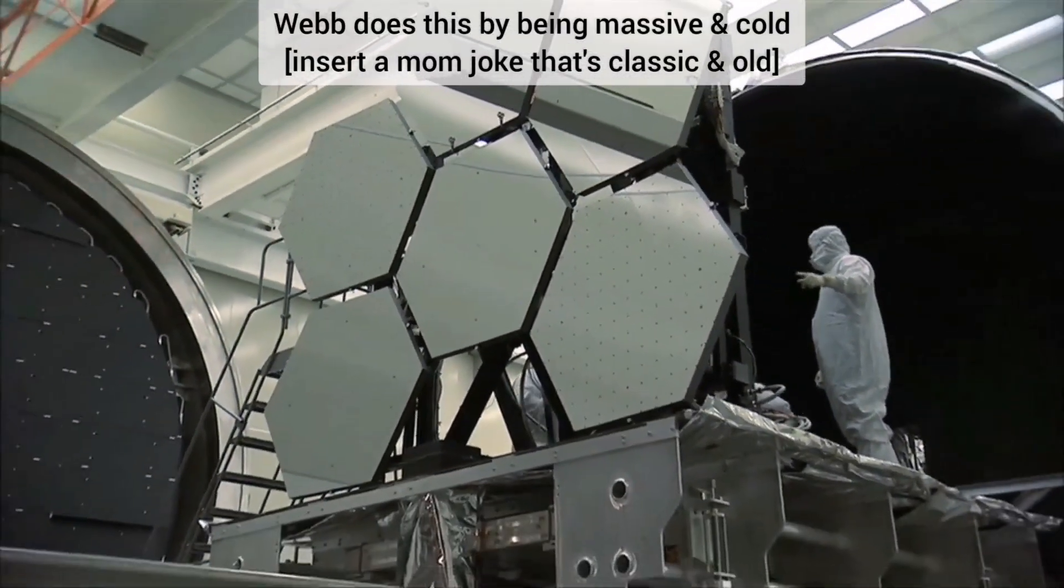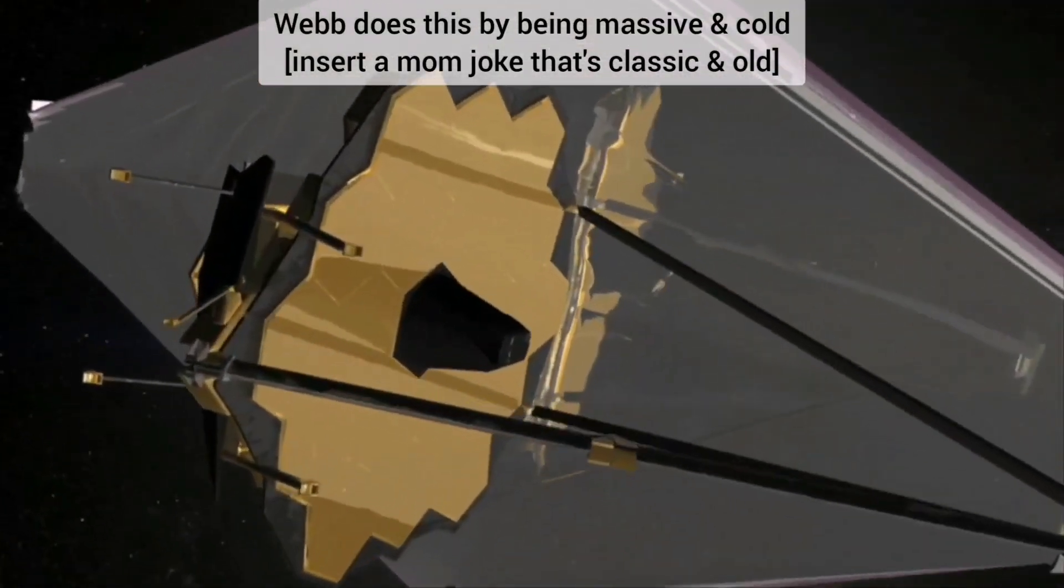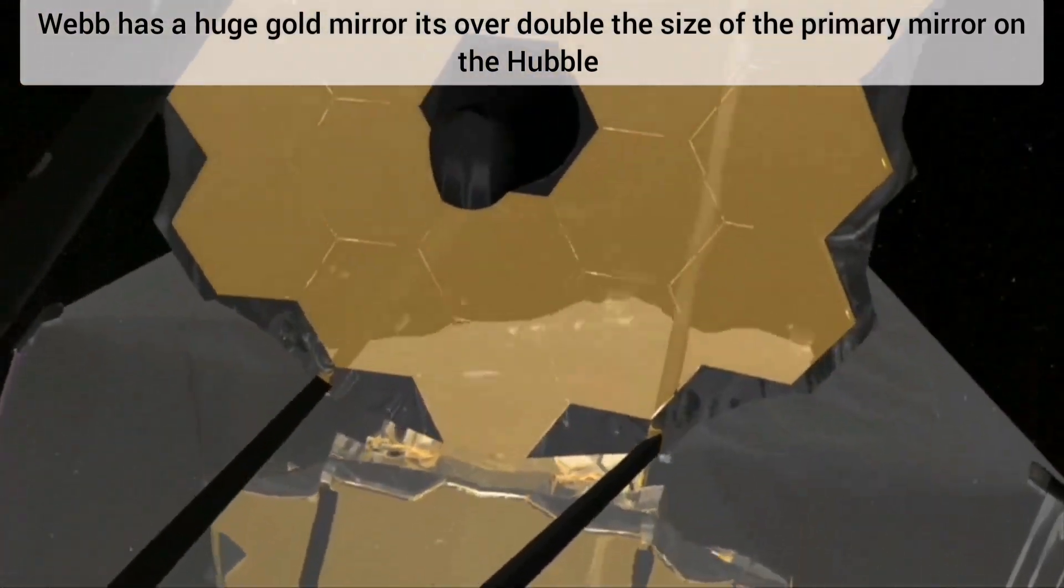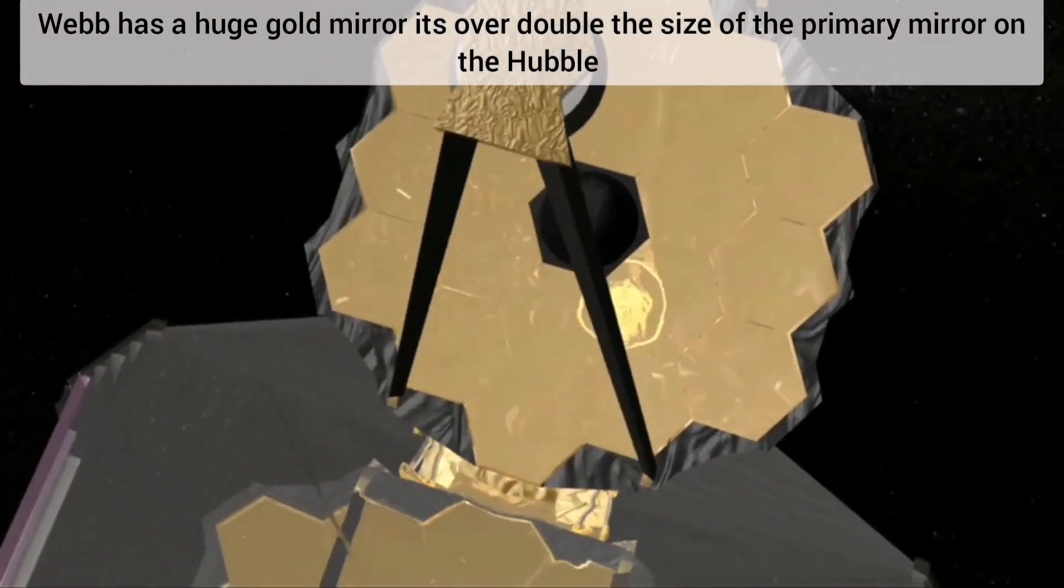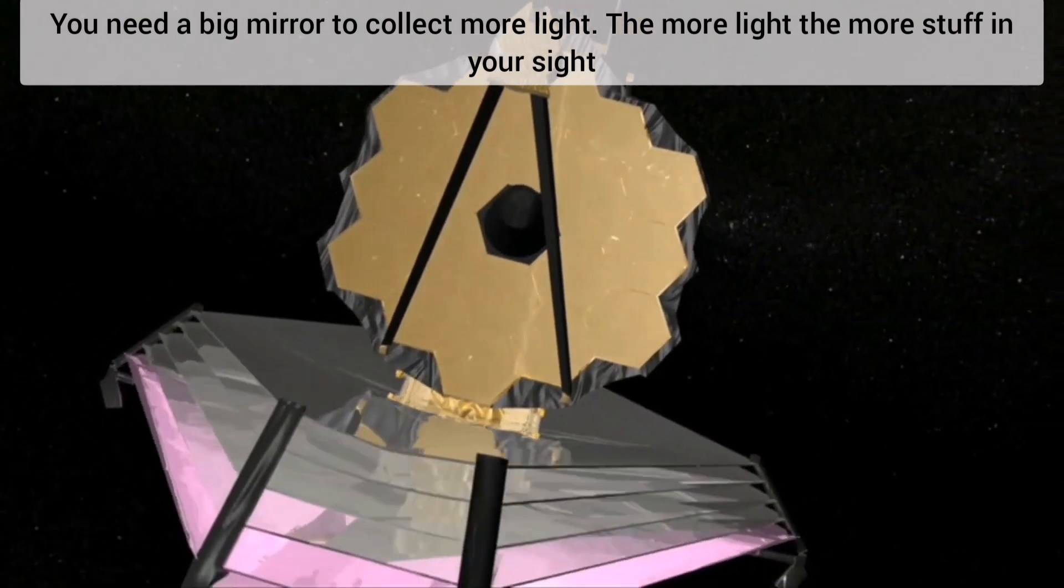Webb does this by being massive and cold. Insert a mom joke that's classic and old. Webb has a huge gold mirror, it's over double the size of the primary mirror on the Hubble. You need a big mirror to collect more light. The more light, the more stuff in your sight.